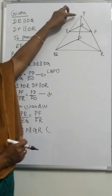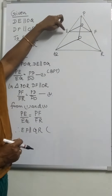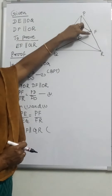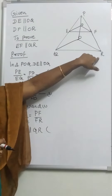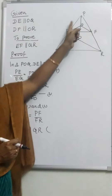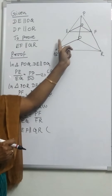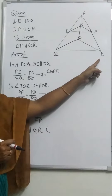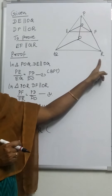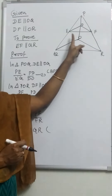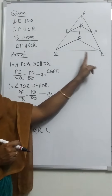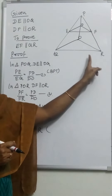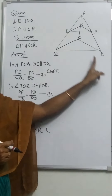PE by EQ is equal to PF by FR. The ratio is the same. Therefore, EF is parallel to QR by the Converse of the Basic Proportionality Theorem.